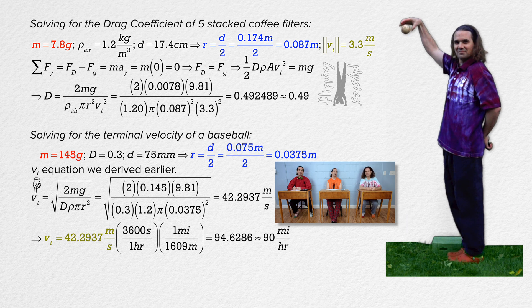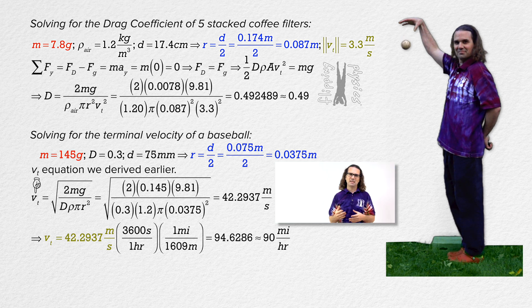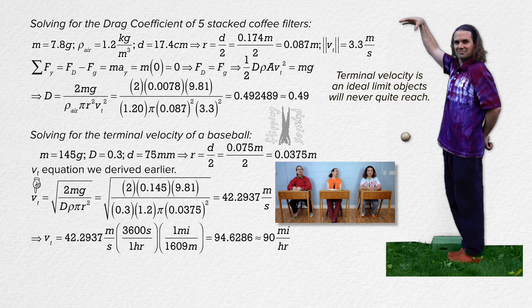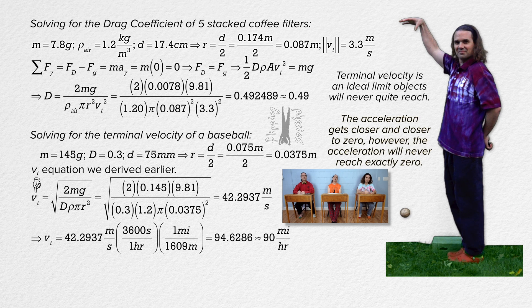How far does a dropped baseball have to go before reaching its terminal velocity? Actually, it is important to realize a dropped object will never actually reach its terminal velocity. Terminal velocity is an ideal limit the object will never quite reach. The acceleration gets closer and closer to zero, but it will never technically reach zero.